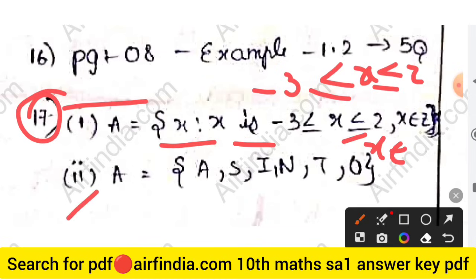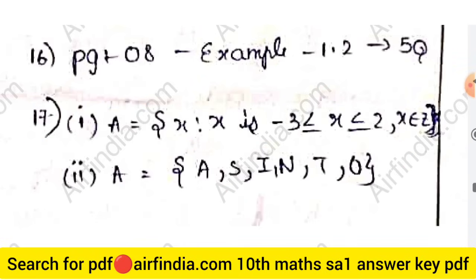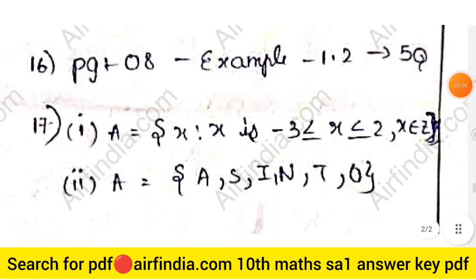The second set a is equal to {a, s, i, n, t, o}. You have the questions and I have given you the solutions accordingly.